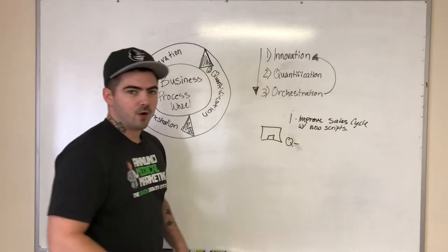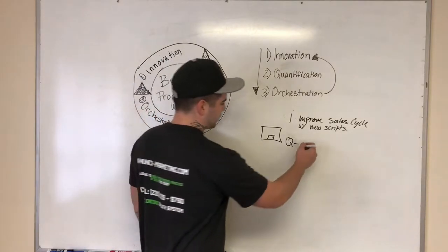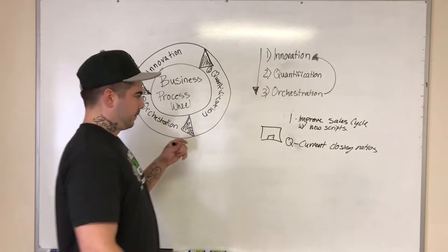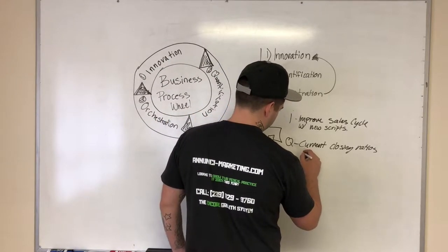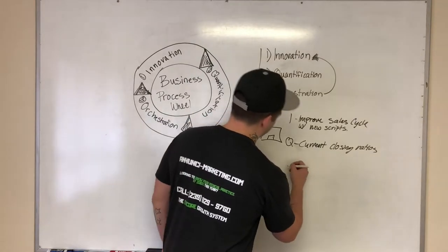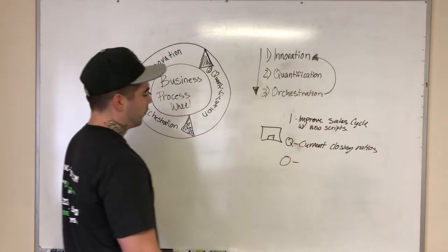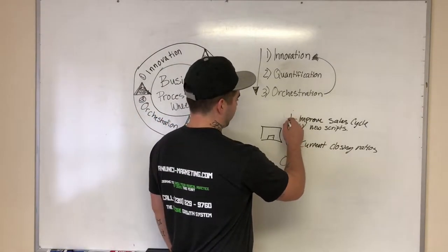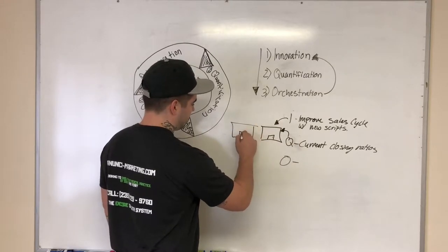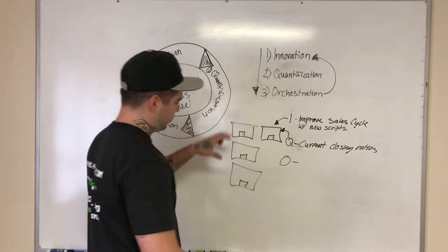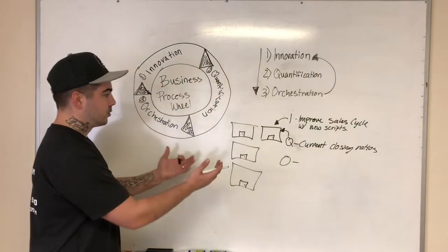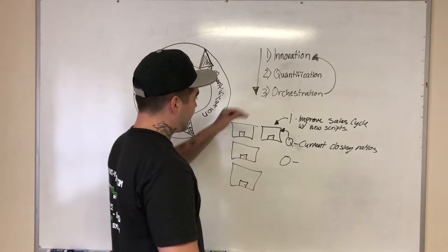Your quantification would be: what are your current scripts closing right now? So your current closing ratios. I'll keep it as simple as possible so everyone can understand exactly what I'm getting at. Then orchestration would be — okay, we put this in place at one location, we quantified it, now we need to get this system into our other three offices. How can we orchestrate this to get this new process, this new system, inside of those offices? That's where orchestration comes in.